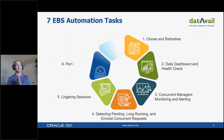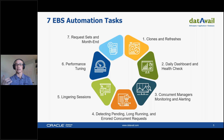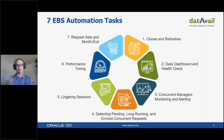So let's begin — seven automation tasks. EBS, as you're aware, is a complex beast with many complex components. Managing these components is not an easy task; it takes time and often teams of people to support it. These seven automation goals have helped us at DataVail perform our tasks much more efficiently and provide additional value to our customers.